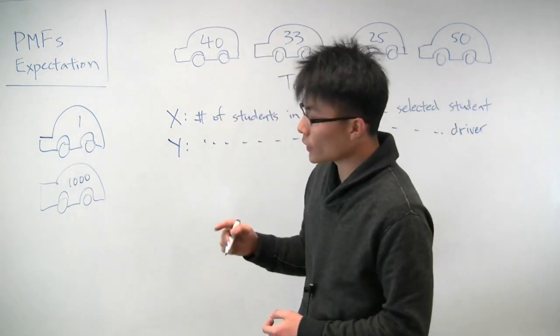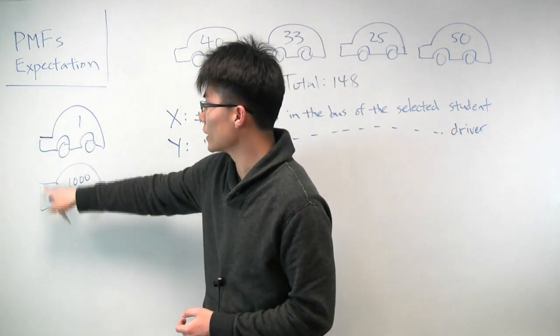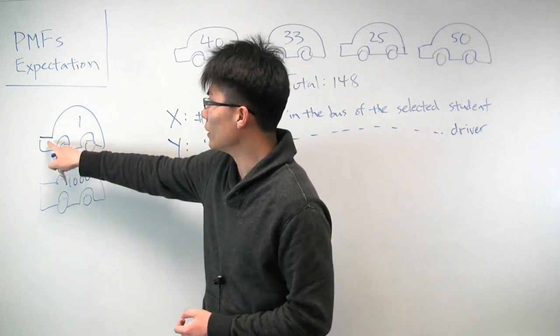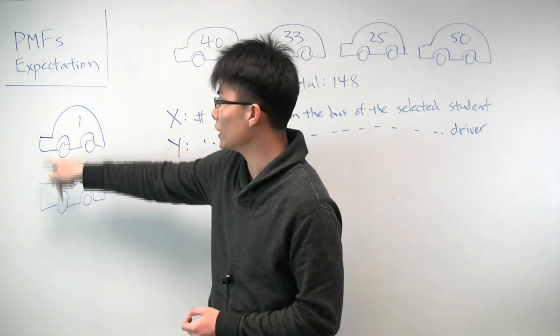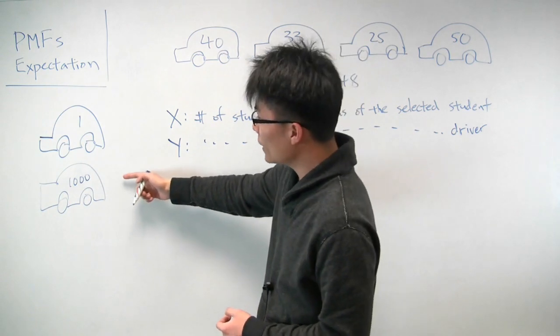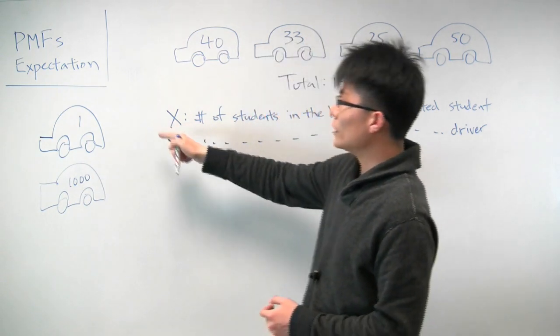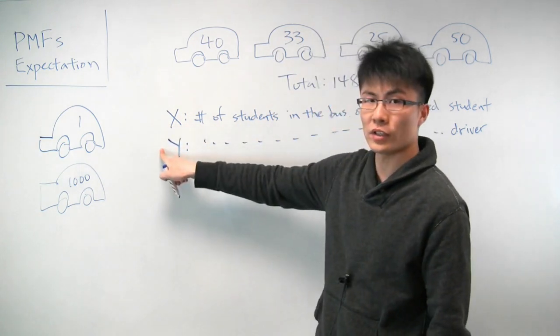But on the other hand, if you selected the driver at random, then you have a 50-50 chance of selecting this one or that one. And so you would expect the expectation there to be roughly 500 or so. And so you can see that if you take this to the extreme, then it becomes more clear what the answer would be. And the argument is that the expectation of x should be higher than the expectation of y.